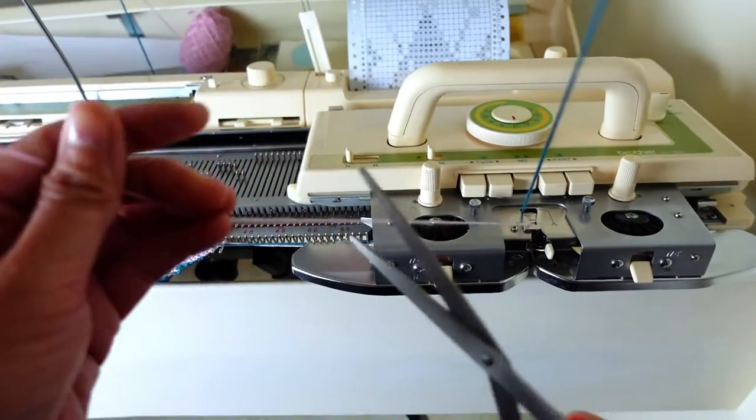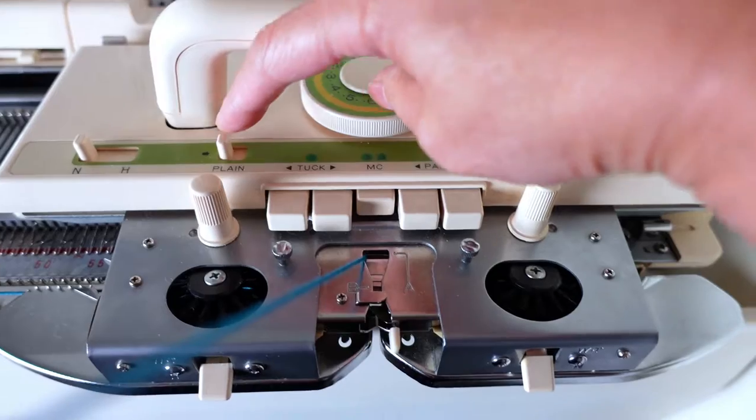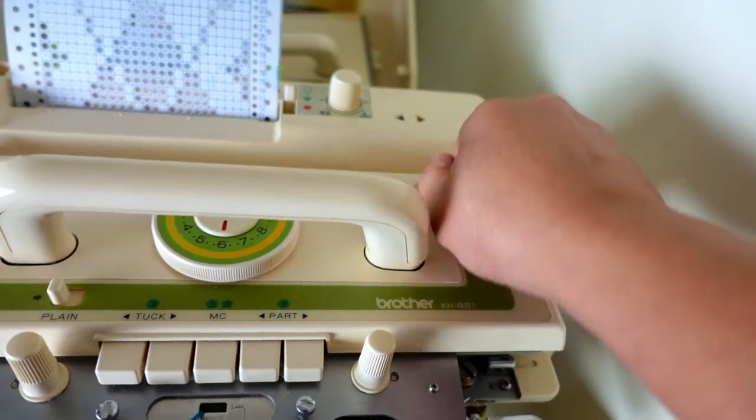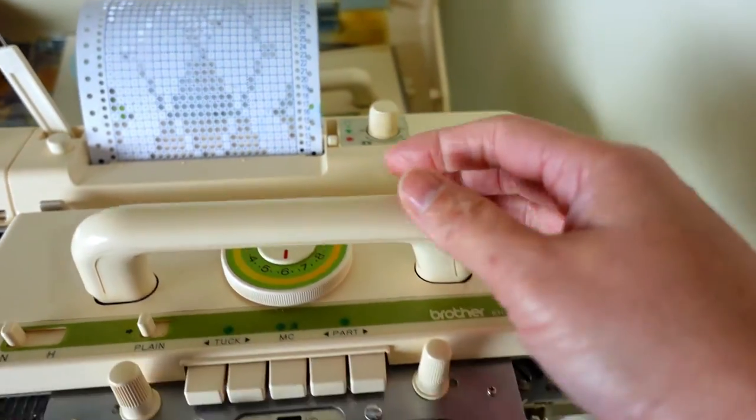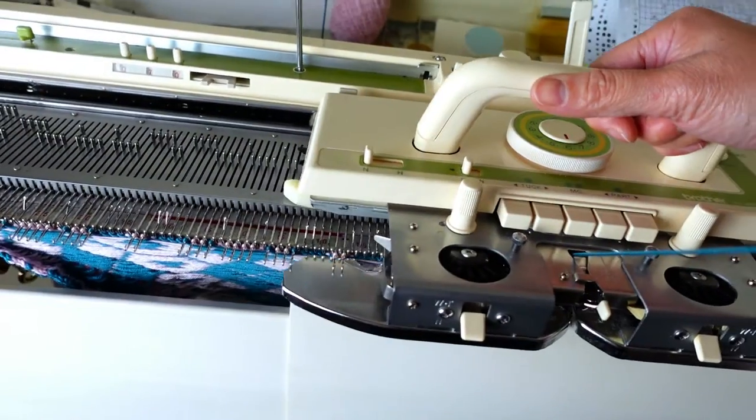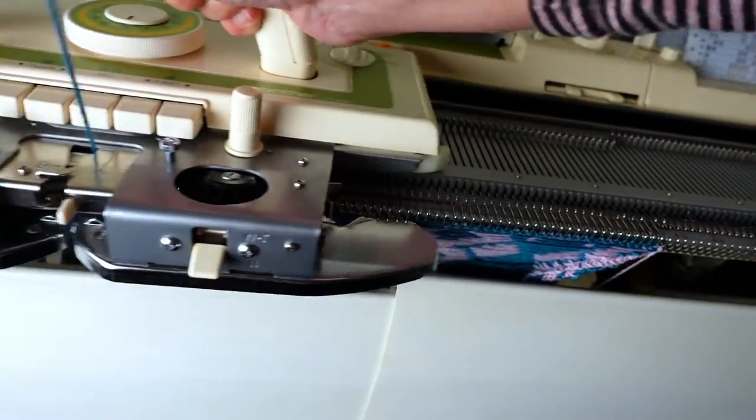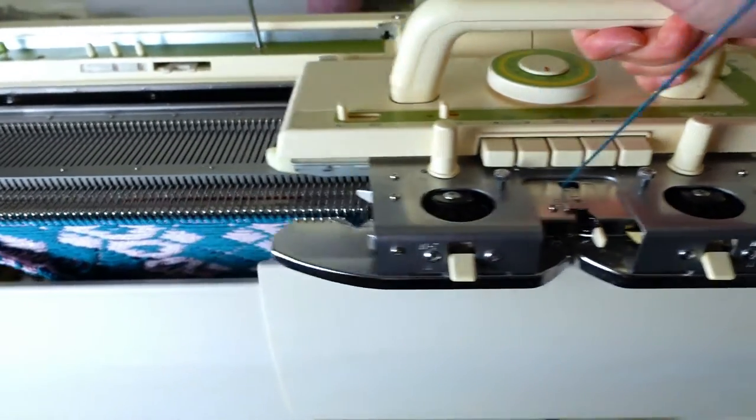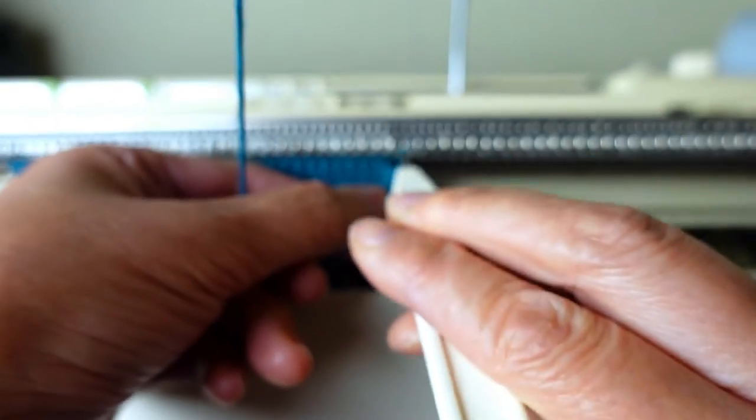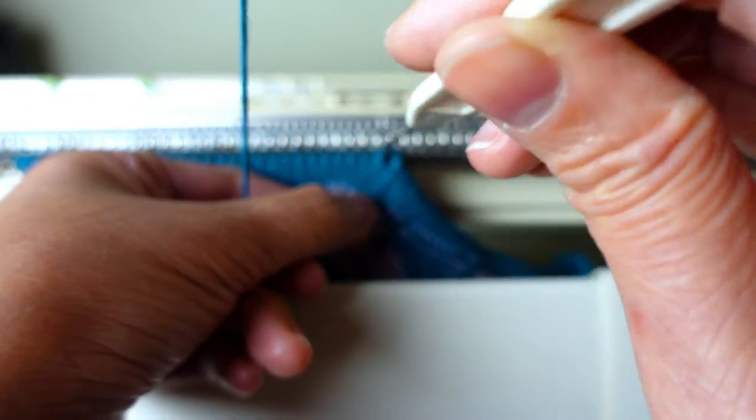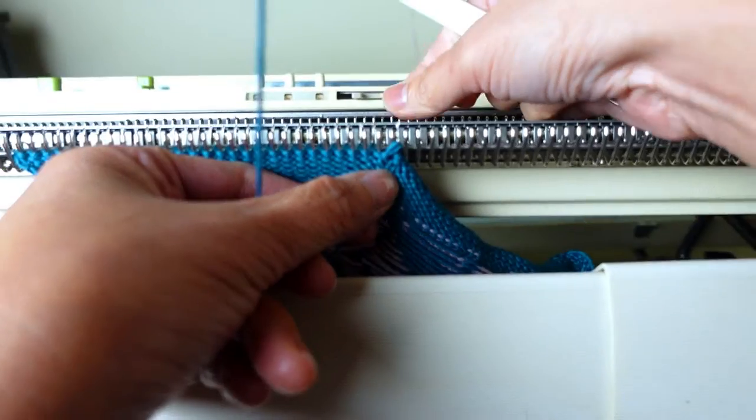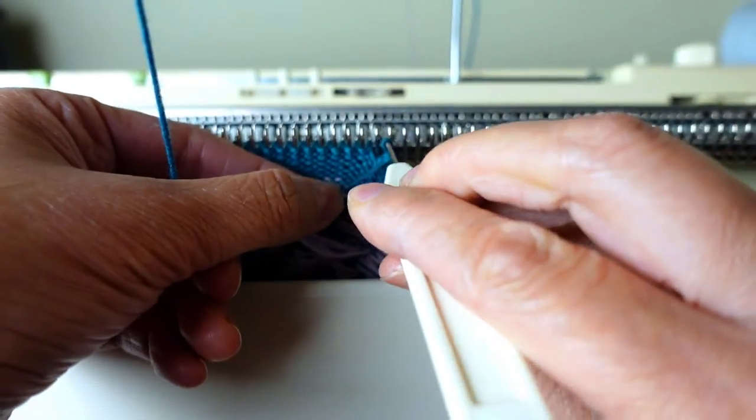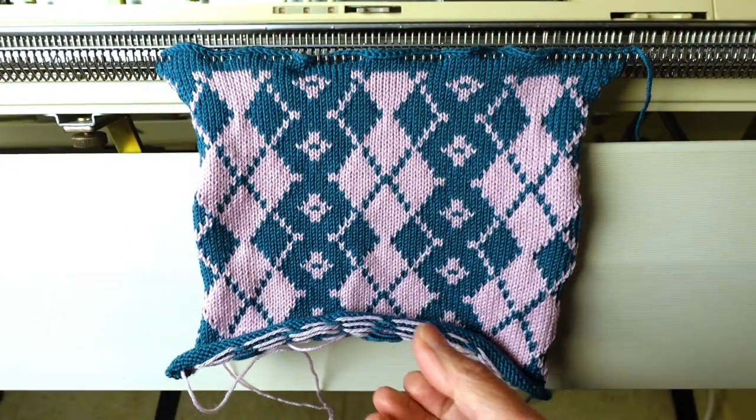After you are done, we cut off one color and continue to knit the other color for a few rows and just bind off. That's the finished piece.